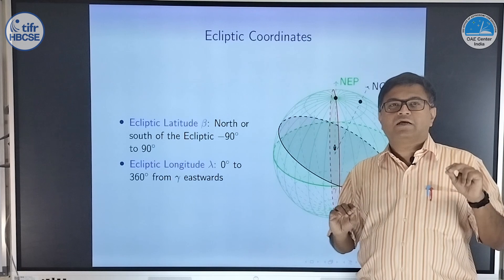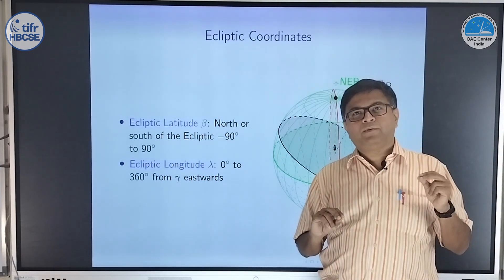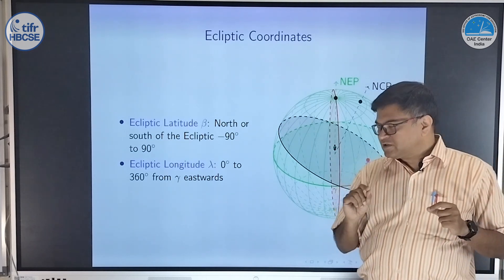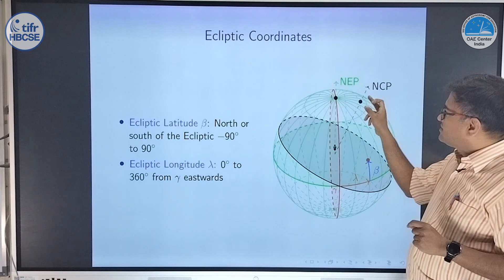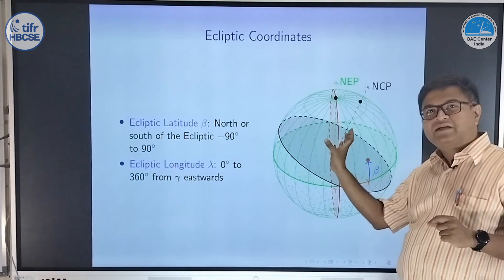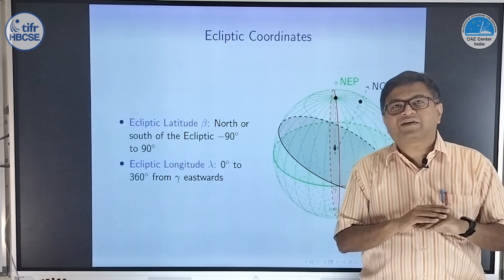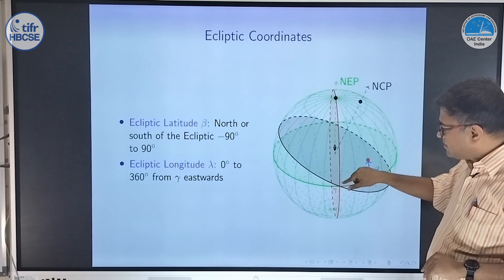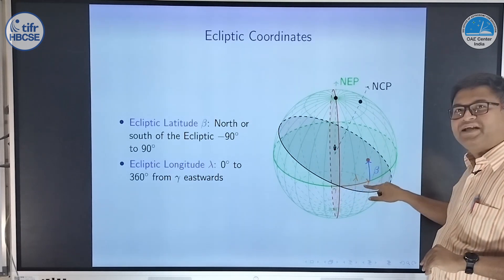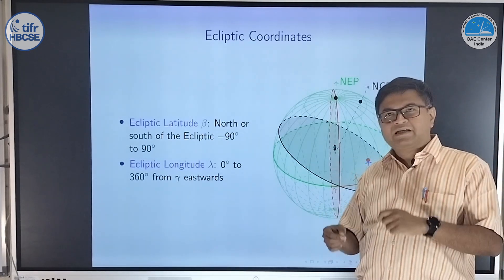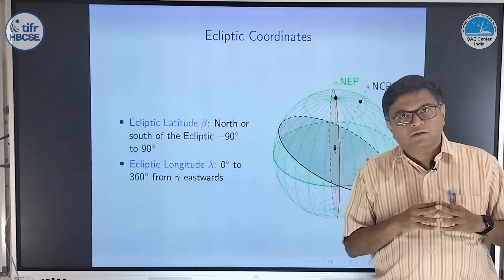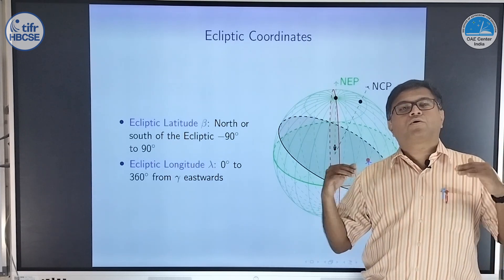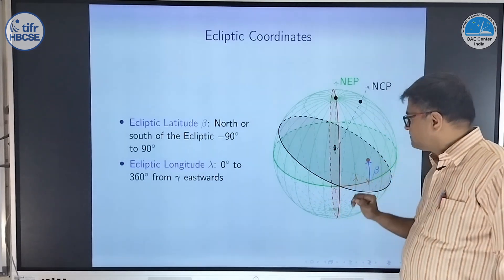The second advantage is that because of the Earth's precession, the vernal equinox point keeps changing. As the vernal equinox point changes, Earth's axis direction changes, which means the equator's direction changes. But the ecliptic direction is not affected by precession. So the location of this point will change, but that change — that shift of the vernal equinox point — will be just linear on the ecliptic. So the change in ecliptic longitude due to precession will be just linear, and there will be no change in ecliptic latitude. Therefore, for calculations involving precession, the ecliptic system is very convenient.